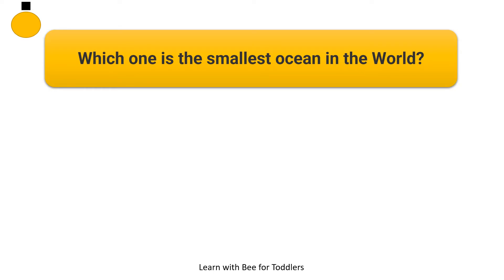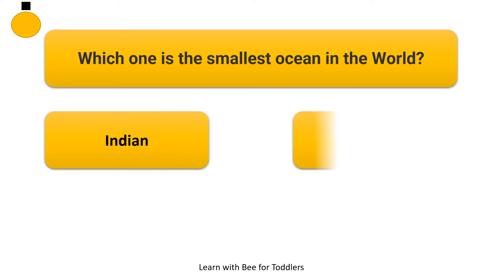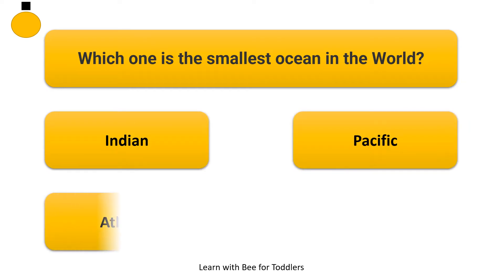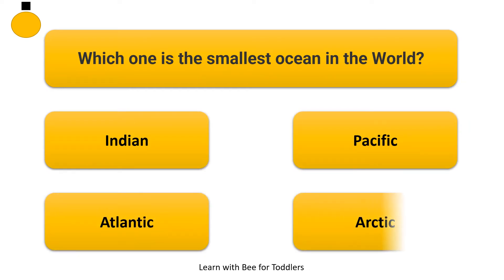Which one is the smallest ocean in the world? Indian. Pacific. Atlantic. Arctic.